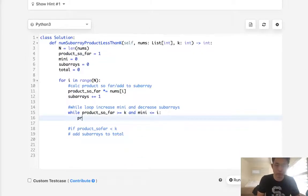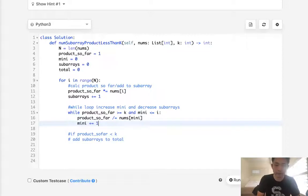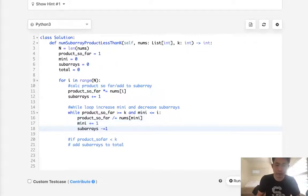And if that's the case, we will have to decrease our product so far, divide it by the nums, whatever our mini is at this point. Now we increase our mini, we decrease the number of subarrays, and we continue our loop.